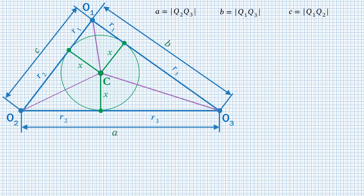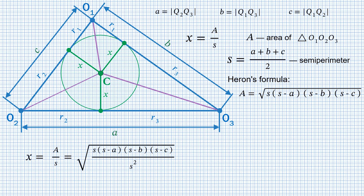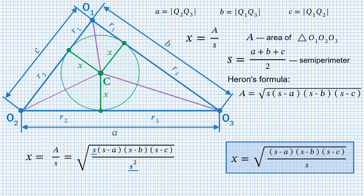Let A, B and C be the lengths of the sides of triangle O1O2O3. There is a simple formula to evaluate the in-circle radius for a triangle: X equals the area divided by the semi-perimeter S, where S is half the sum of all sides. There are YouTube videos dedicated to proving this formula. To calculate the area of the triangle we will use Heron's formula, which also has dedicated videos on YouTube. Substituting the area from Heron's formula, and moving S under the square root where it reduces with S in the numerator, we get the formula for the in-circle radius.